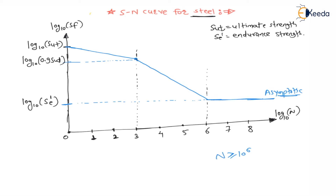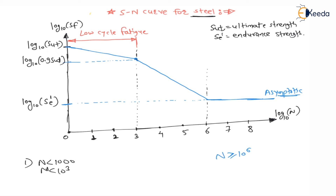Very important points: whenever the component completes fewer than 10³ revolutions (less than 1000), it is called low cycle fatigue. For revolutions less than 10³, the fatigue failure is called low cycle fatigue.